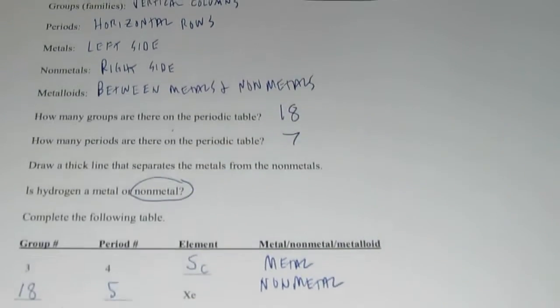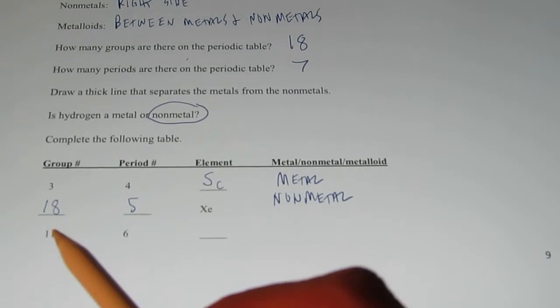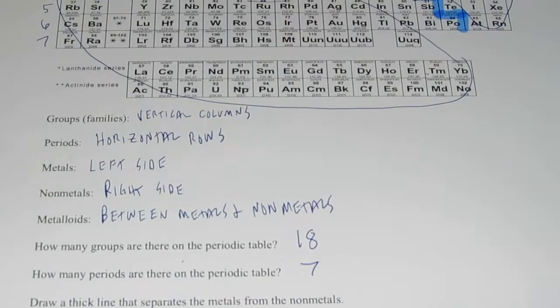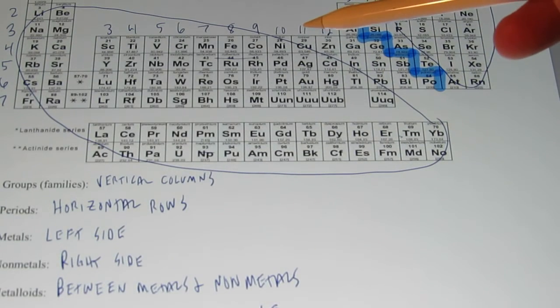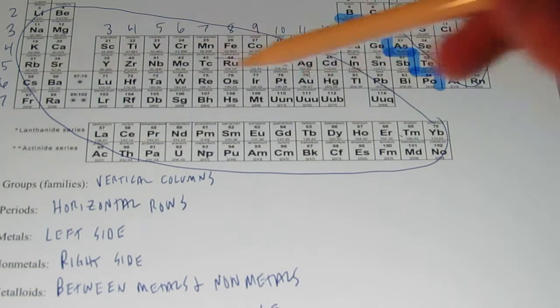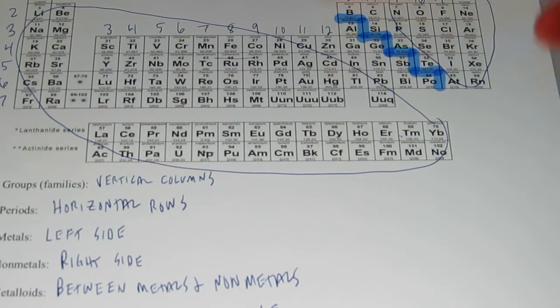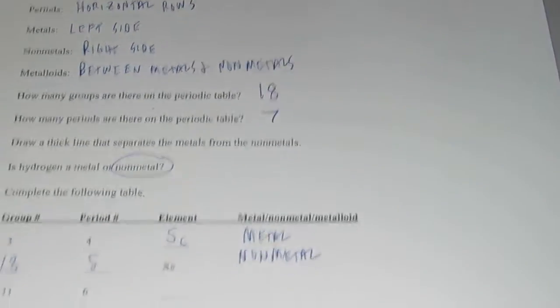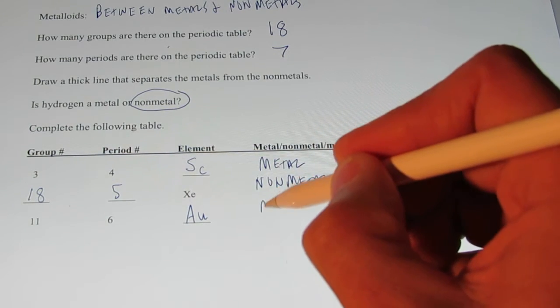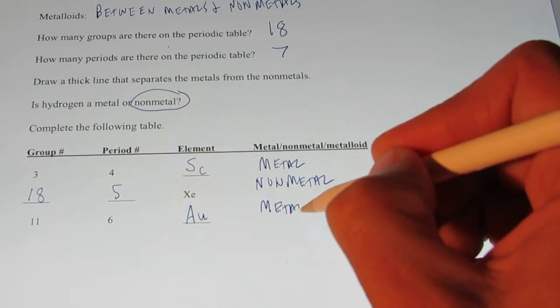Okay? And the last one on our list. We have group number 11, period number 6. So, group 11, that's way over here, period number 6. Oh, it's everybody's favorite element. Looks like group 11, period 6 is the element AU. Of course, that's gold. It was on the left side of the table, so that's another metal.